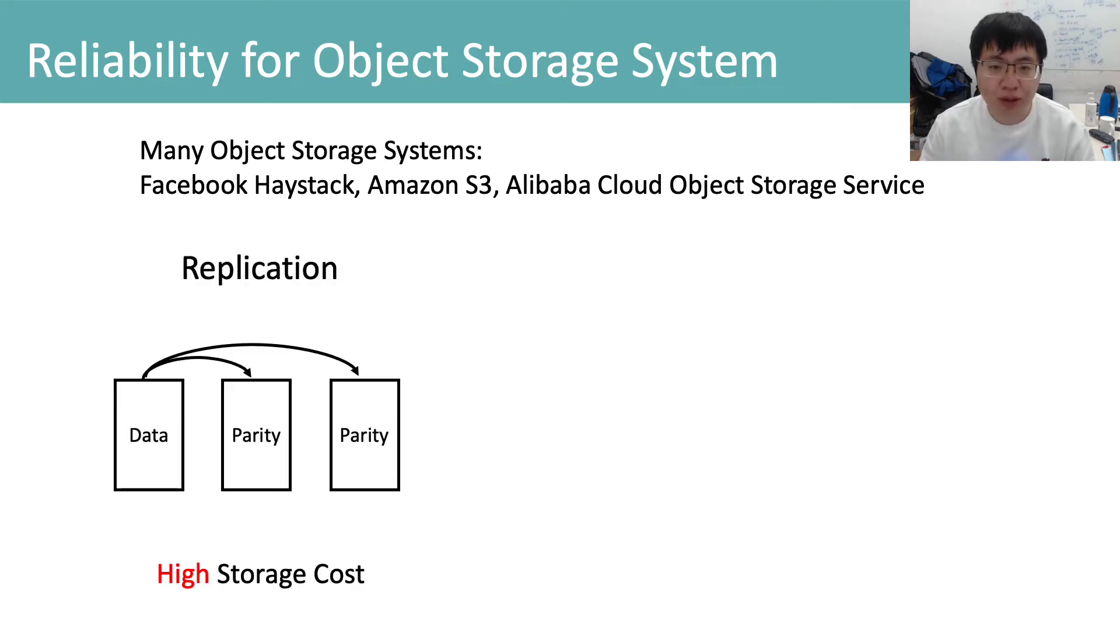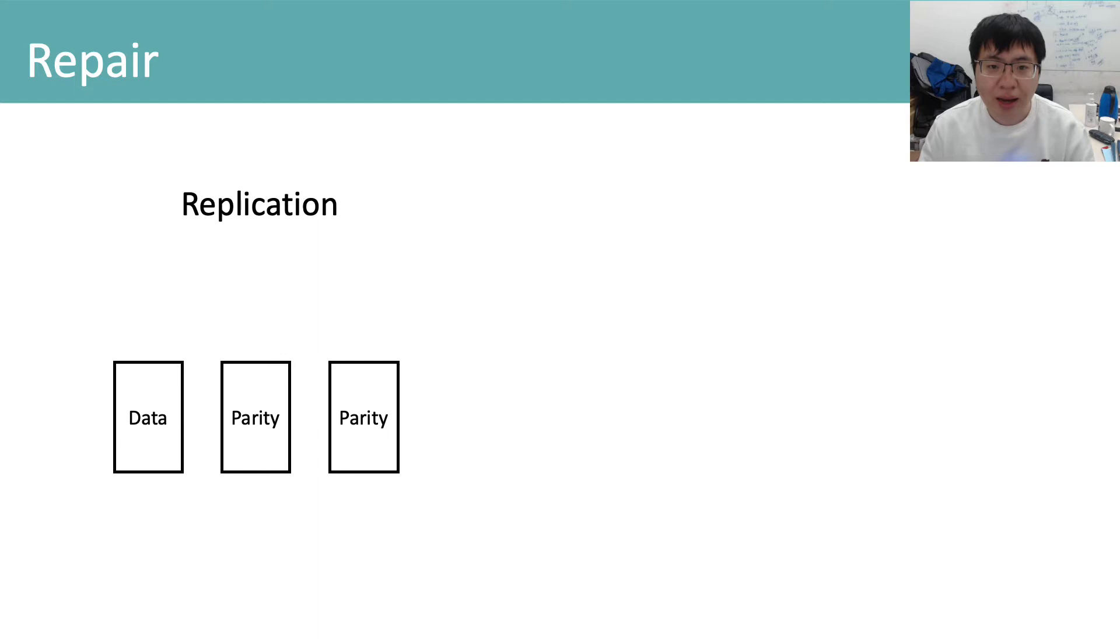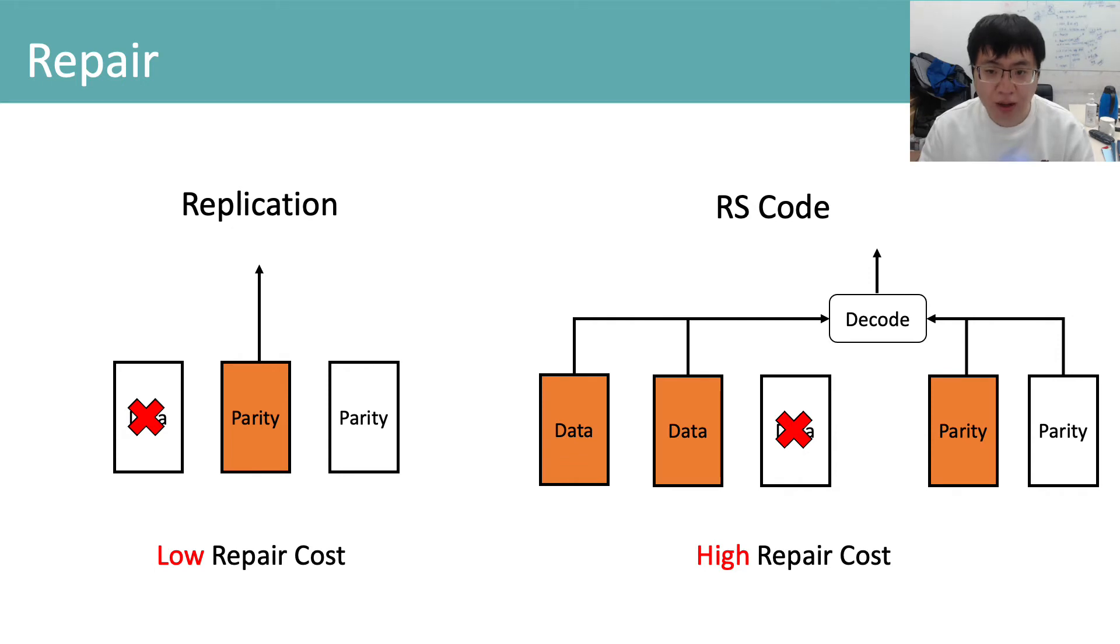Replication is a common way to achieve reliability for these systems. However, replication has high storage cost. Erasure codes such as Reed Solomon code are widely used to achieve reliability and reduced storage cost compared to replication. The amount of data needed for repair due to data loss is referred to as repair cost. For replication, we only need to repair by copy. Erasure codes suffer from high repair cost compared with replication.